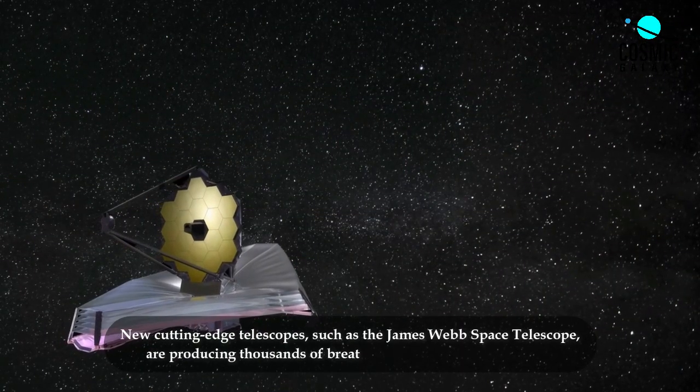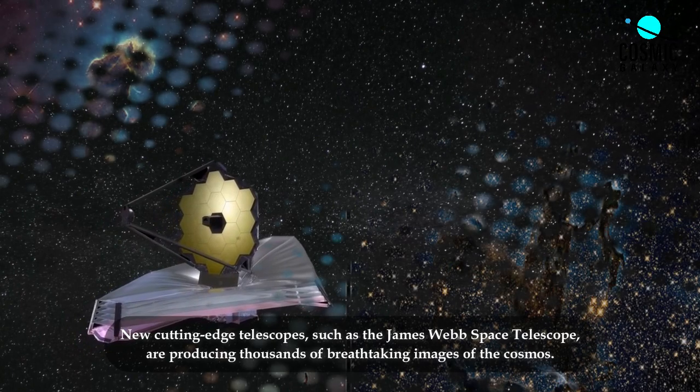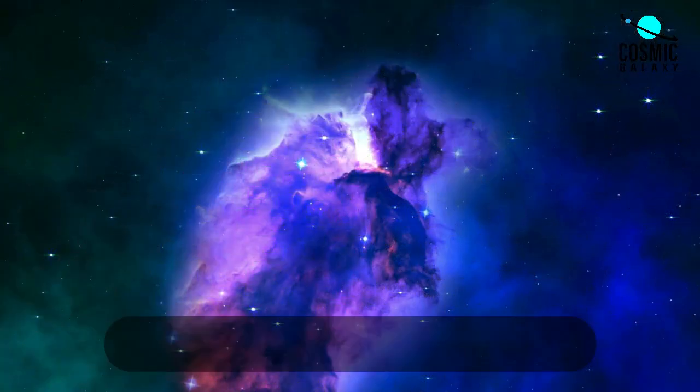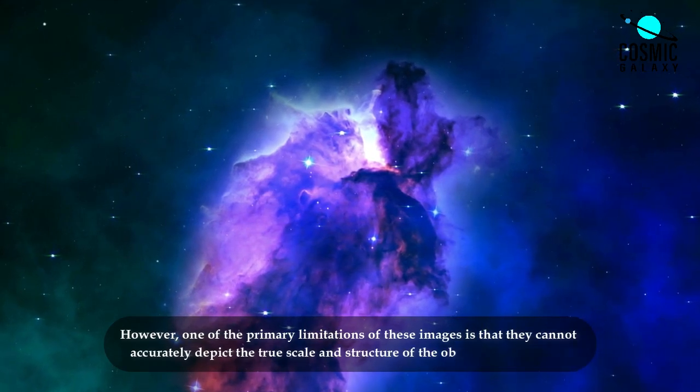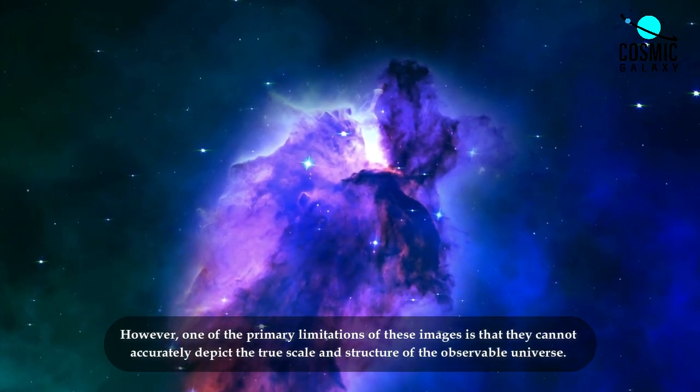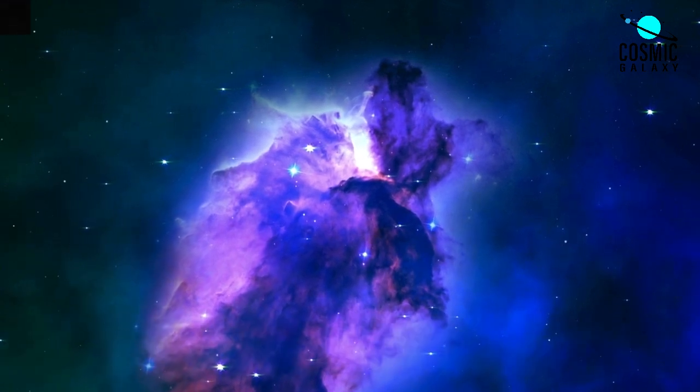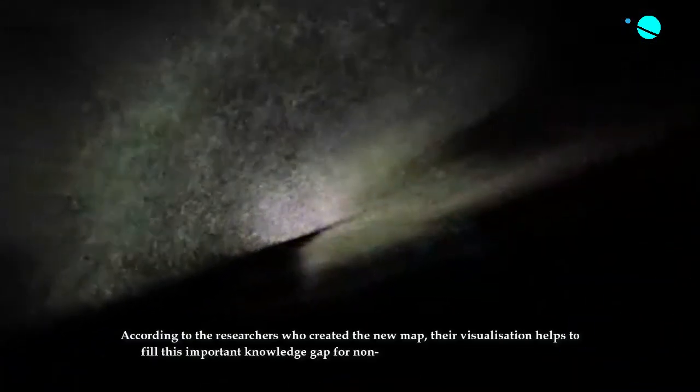New cutting-edge telescopes, such as the James Webb Space Telescope, are producing thousands of breathtaking images of the cosmos. However, one of the primary limitations of these images is that they cannot accurately depict the true scale and structure of the observable universe. According to the researchers who created the new map, their visualization helps to fill this important knowledge gap for non-academic astronomy enthusiasts.